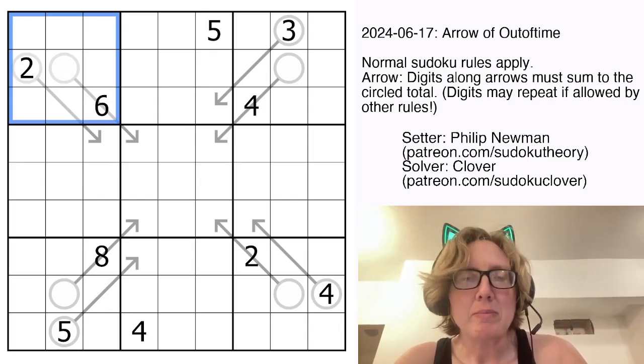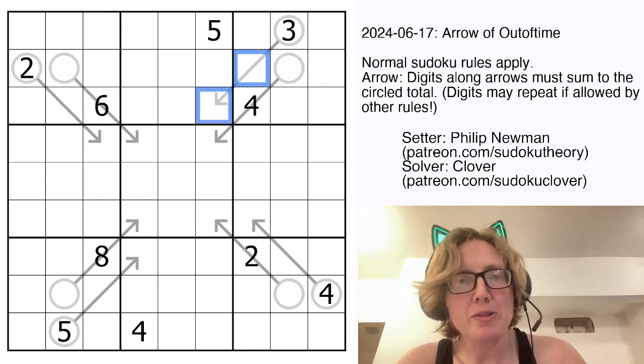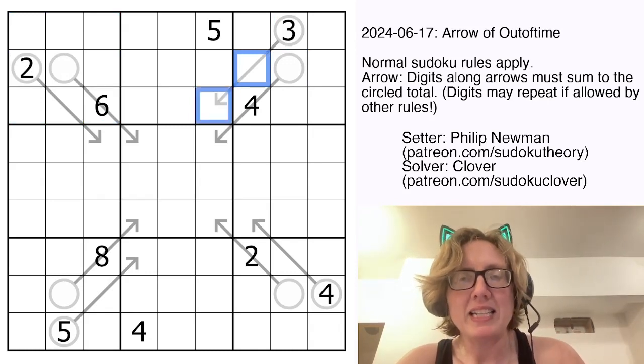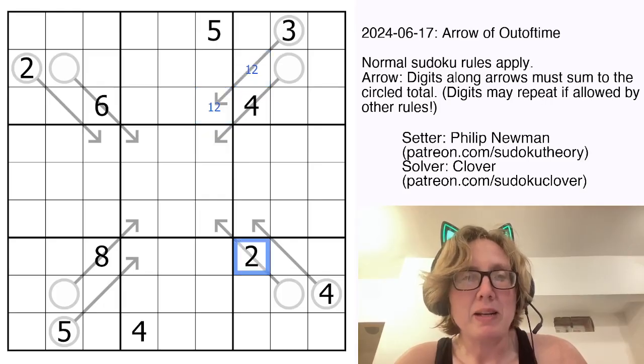We also have some arrows in the grid, where whatever digit is in the circle equals the sum of the digits on the rest of the arrow. So for instance, these two cells that I have highlighted here have a sum of 3. So that has to be 1 and 2, because that is the only way to make a sum of 3 using any Sudoku digits.